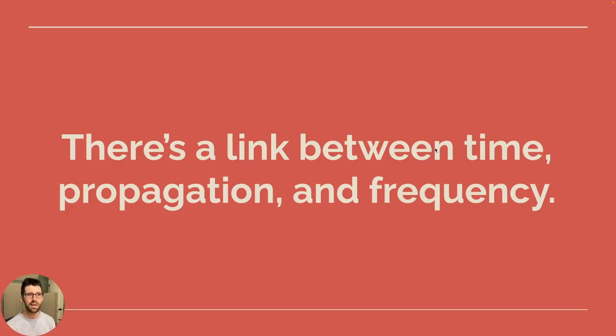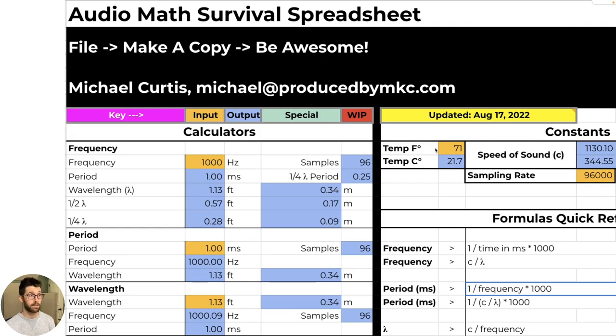There's a link between time, propagation, and frequency. They're all measured by different ways, but they all relate to one another. In my audio math survival spreadsheet, the first three things you see are frequency, period, and wavelength. Period is the same thing as cycle time. A 1k wave for it to go up and down is going to also travel 1.13 feet, and that's its wavelength from its starting and going through a full cycle. Those are the underlying physics we need to understand what happens with a comb filter.